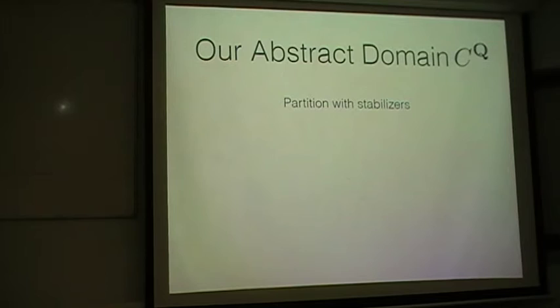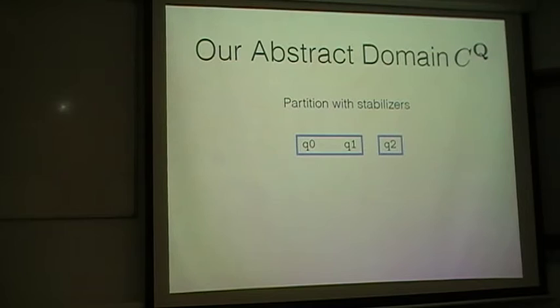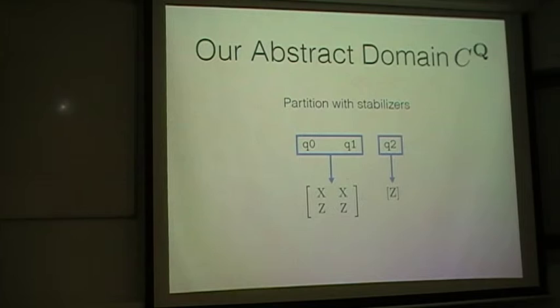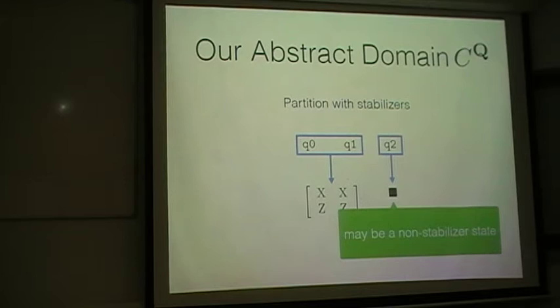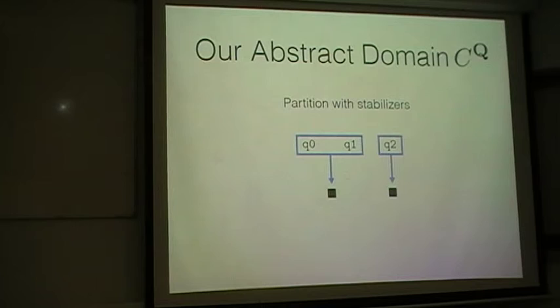Using this formalism, we introduce our abstract domain CQ, composed of a partition with stabilizers, where each set of a partition is connected to stabilizers. The target language has non-Clifford gates, and some states are non-stabilizer states. So in order to denote such states, we add a new symbol to denote that the state may not be a stabilizer state. We also use this symbol for multiplicity. Then on this abstract domain, we define abstract semantics.